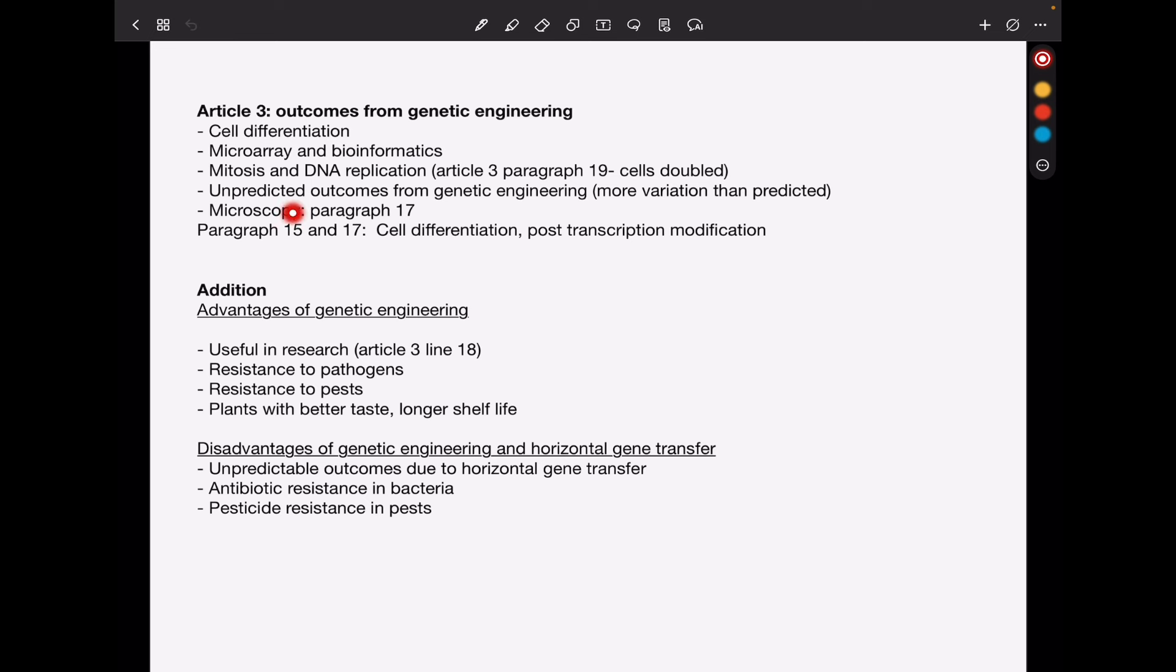In Paragraph 17, they talked about microscopy. And what they talked about was the microscope was only able to distinguish 70 different colors, so meaning they could ask about the different microscopes, TEM, SEM, and so on. And again, maybe or not. And then Paragraph 15, 17, cell differentiation, post-transcription modification, and so on.